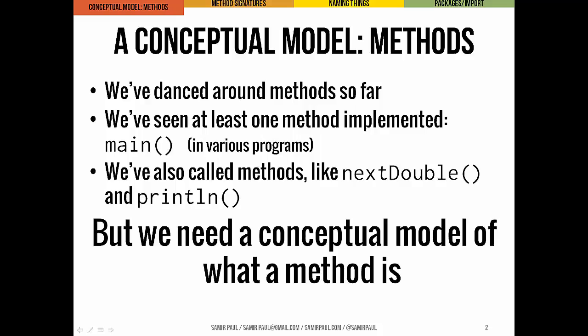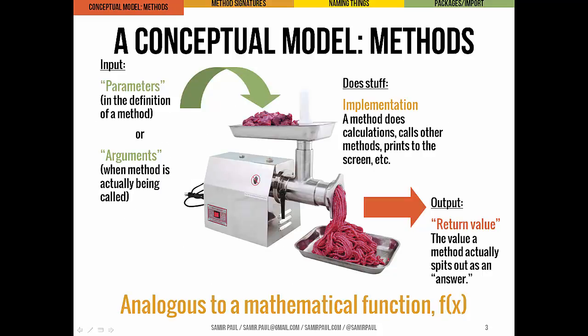We've danced around exactly what methods are so far, but you probably have an intuitive idea of this. We've seen at least one method we've implemented — the main method — and we've called methods we don't really know how they're implemented, like the scanner object's nextDouble method and the println method from a System.out object. It would be helpful to have a better mental model of what a method exactly is. It's really analogous to a mathematical function: it takes some inputs, does some stuff, and maybe returns an output.